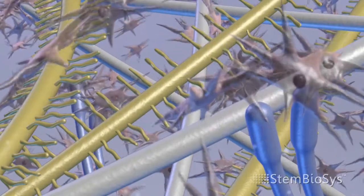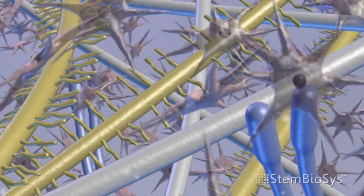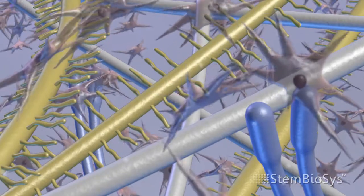This extracellular matrix is a complex, multi-protein composite that mimics the natural bone marrow niche for stem cells.